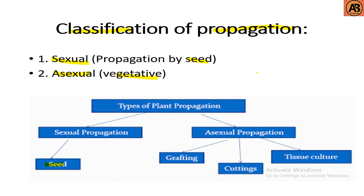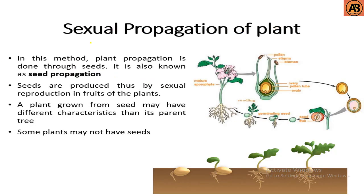First is sexual propagation. In this method, plant propagation is done through seeds; it is also known as seed propagation. Seeds are produced by sexual reproduction in fruits of the plants. A plant grown from seed may have different characteristics than its parent tree, and some plants may not have seeds. Here in the picture we can see the sexual propagation — that is, formation of seed and germination of seed.